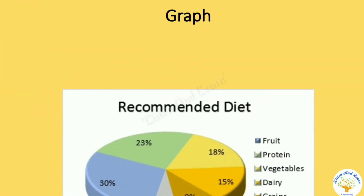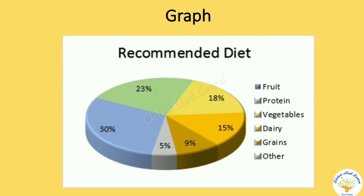Then, a graph showing recommended diet. These are all examples of labeling diagrams. What is the recommended diet? Fruit, protein, vegetables, dairy, grains and other — in percentage. It is a recommended diet.